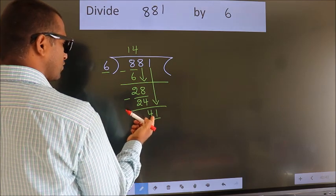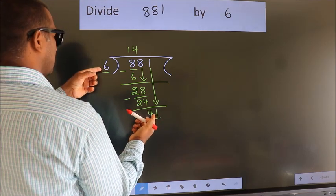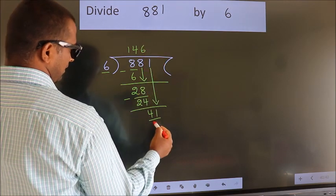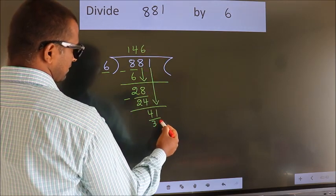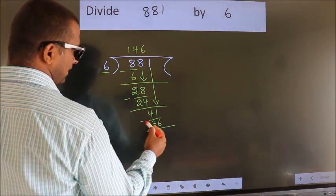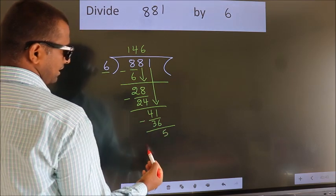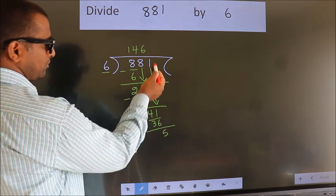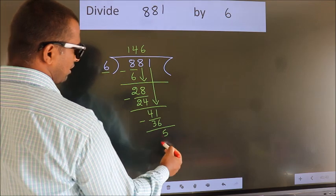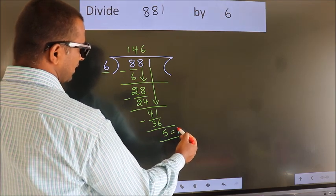A number close to 41 in the 6 table is 6 × 6 = 36. Now we subtract. We get 5. No more numbers to bring down. So we stop here. This is our remainder.